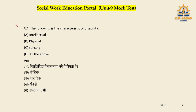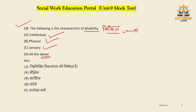Question number four: Which of the following is a characteristic of disability? Options include intellectual, physical, sensory, and others. Intellectual disability, physical disability, and sensory disability are all valid types. All three are correct, so all three dimensions are valid.